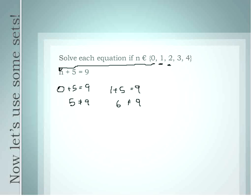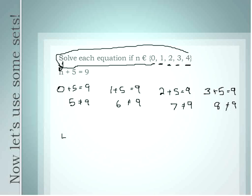That's not going to work either. Let's try the next number, 2. 2 plus 5 is equal to 9 — but 2 plus 5 is 7, which is not equal to 9. I'll move on to 3. 3 plus 5 is equal to 9 — but 3 plus 5 is actually 8, so that is not equal to 9. So I'm going to my final number, 4. I'm going to substitute that in for the value of n.